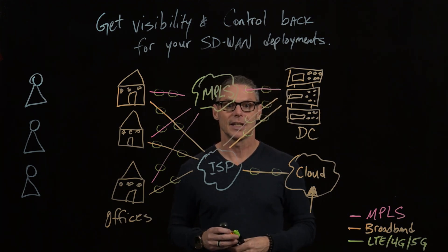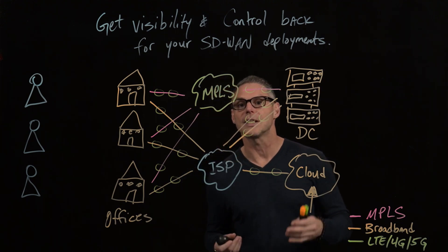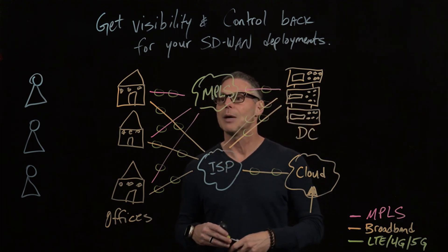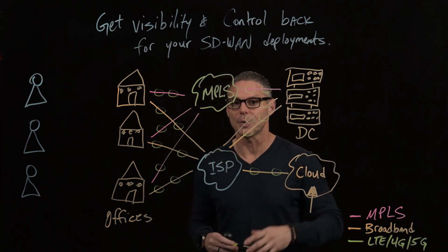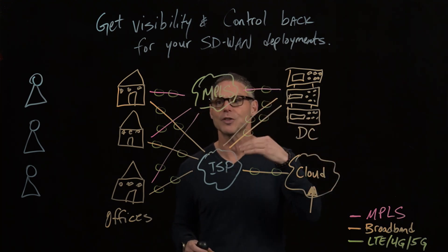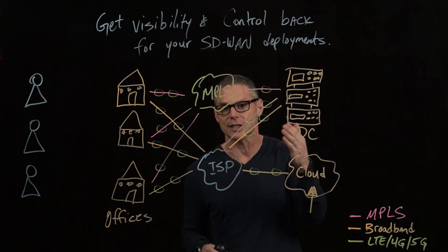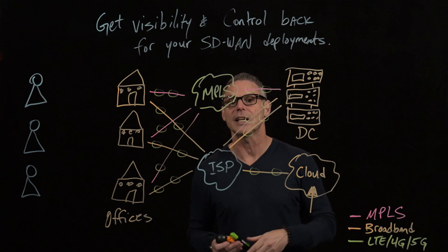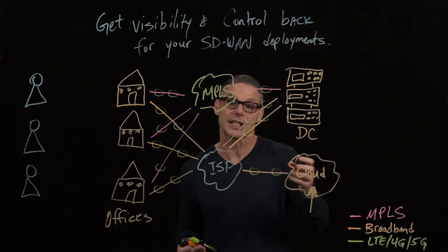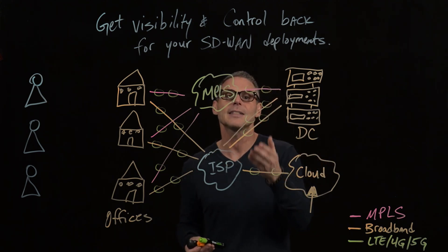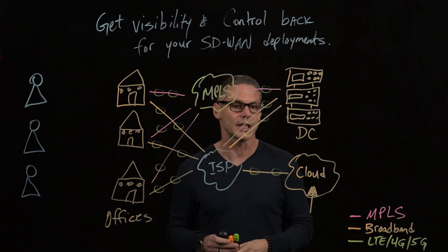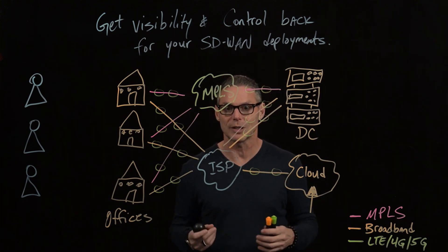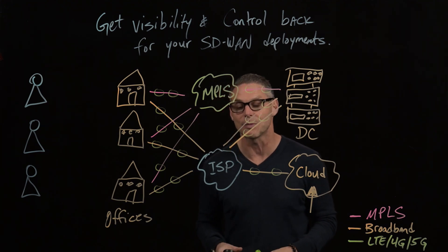Besides that, you need to correlate the underlay and overlay within your SD-WAN technology. What that means is that the virtualization component of SD-WAN, as it traverses over physical network architecture to deliver that user experience, you need to be able to pinpoint if that physical network architecture is having a performance problem, and whether it impacts the SD-WAN delivery of the application experience. That correlation is extremely important when you deploy SD-WAN technologies.